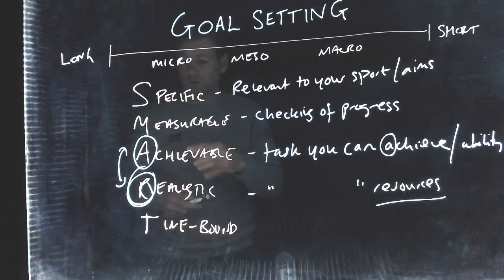Achievable is for ability to do it. You know, are you good enough at the moment? And realistic is more to do with resources. So R for realistic, R for resources.